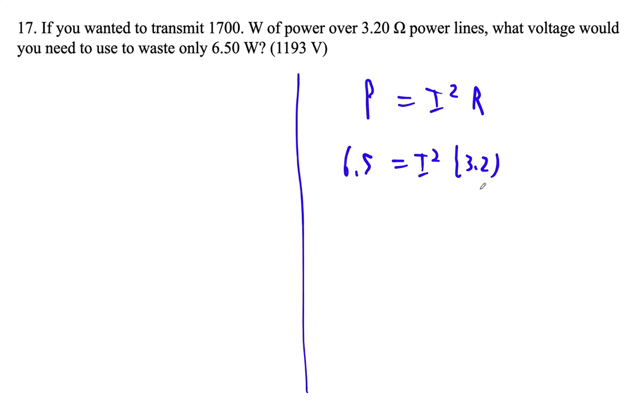So 6.5 divided by 3.2 is I squared. And then square root that. And I get that I is 1.425219 amps.